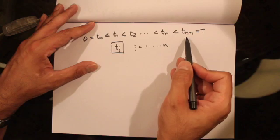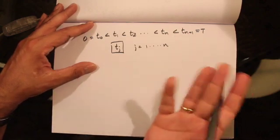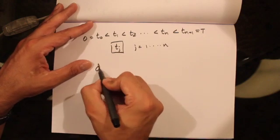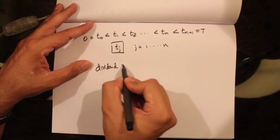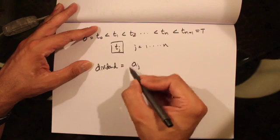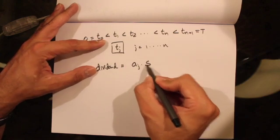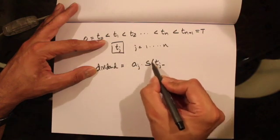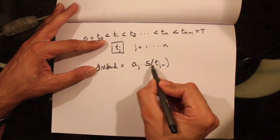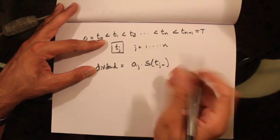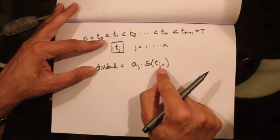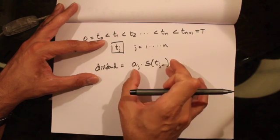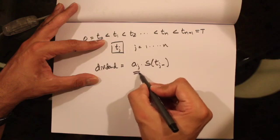How much dividend do we get at each of these tj's? The dividend amount paid out at each tj is equal to aj, which is the rate of dividend, multiplied by the value of the stock just before the dividend is paid out. So at each tj, just before the dividend is paid out, the stock is trading at S(tj−). This denotes the value of the stock just before the dividend is paid out, and aj is basically a...